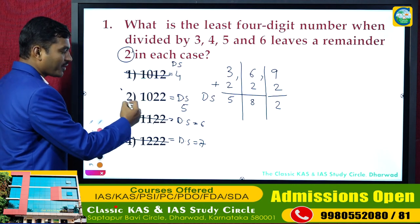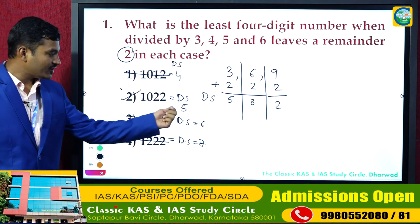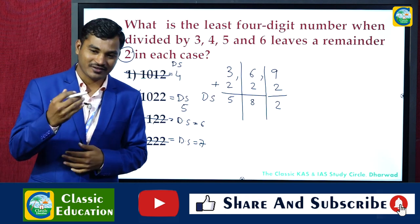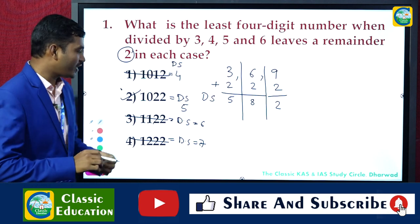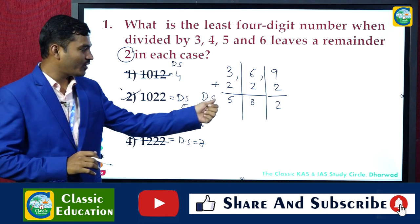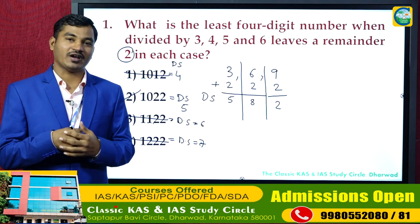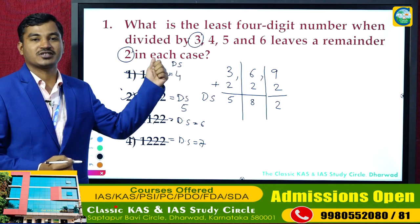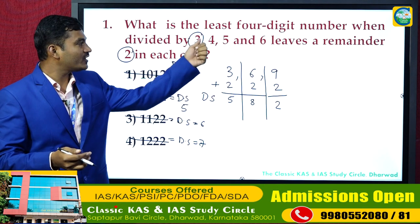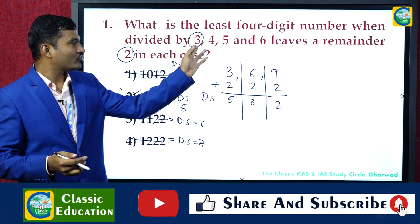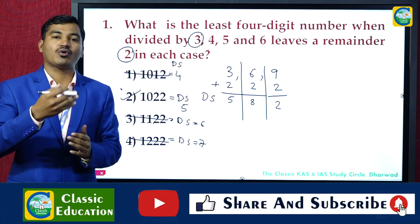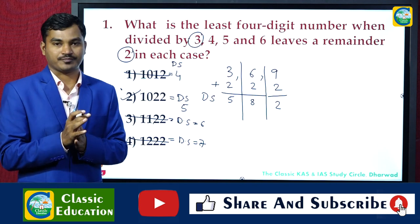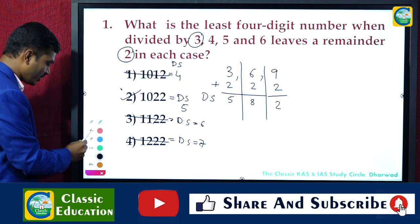There is only one number from the options having digit sum 5, so that is the answer. When discussing this in class, students asked: what if two options have digit sum 5 or 2? Then you go with the next number — check the divisibility condition for the next digit. By eliminating options one by one, you can solve this question quickly.